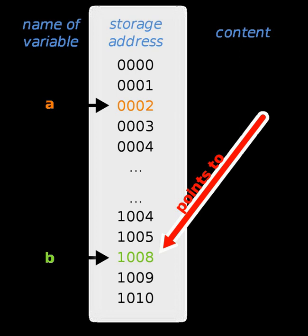A base pointer is a pointer whose value is an offset from the value of another pointer. This can be used to store and load blocks of data, assigning the address of the beginning of the block to the base pointer.